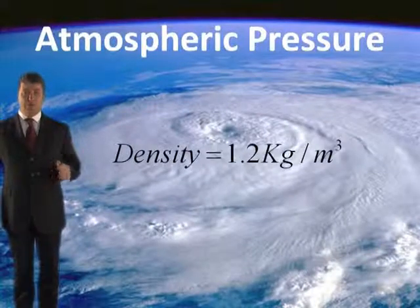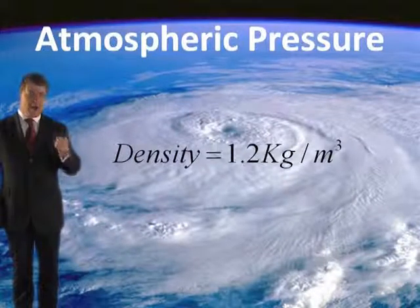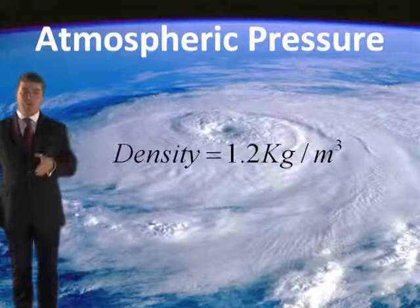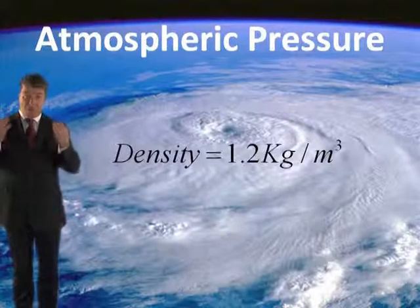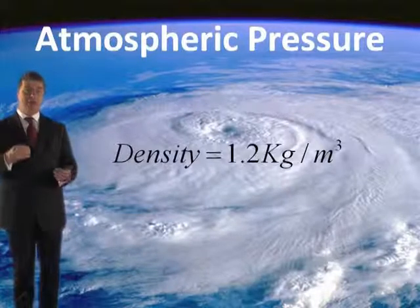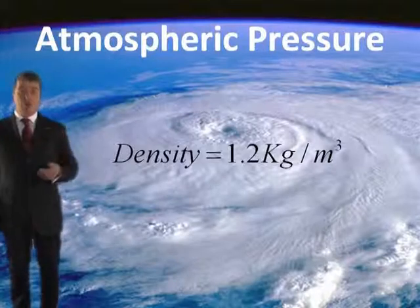Generally, one metre cubed of air has a density of 1.2 kilograms per metre cubed — that's roughly at normal conditions. It weighs the same as half a bag of sugar. Air does possess mass and has density: 1.2 kilograms per metre cubed. That's about a thousand times less dense than water.